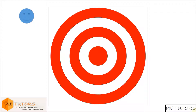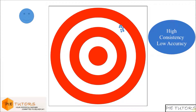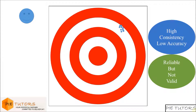The first person fires all his bullets and it is observed that all his bullets hit at some distance from the center. We can see that the firing consistency for this person is high but the firing accuracy is low. This scenario is analogous to a reliable but invalid measure.